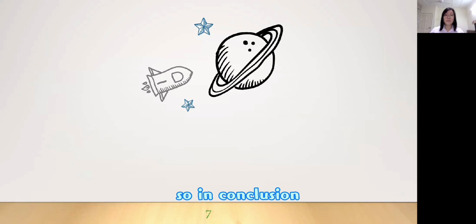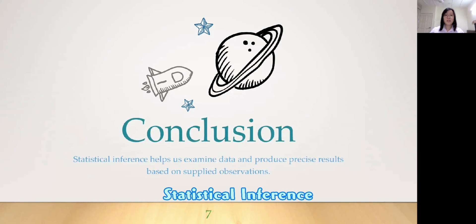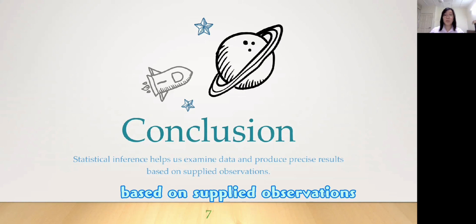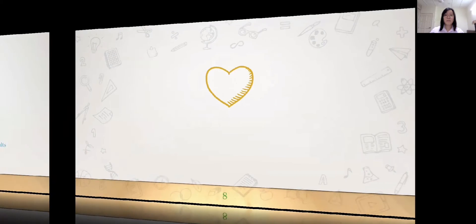So, in conclusion, statistical inference helps us examine data and produce precise results based on supplied observation. And this is all from Group 5. Thank you.